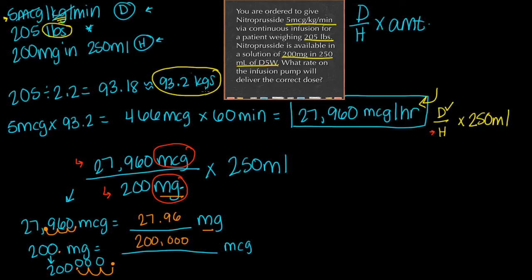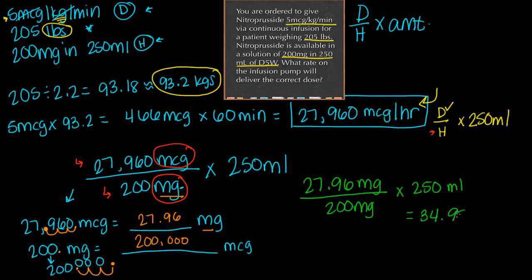I'm going to stick with the milligram conversion. My formula is going to be 27.96 milligrams over 200 milligrams times my volume or amount, which is 250 mL. This is just our simple math. We're going to do 27.96 divided by 200, then multiply that by 250, and we get 34.95, which you can round to 35 mL per hour.